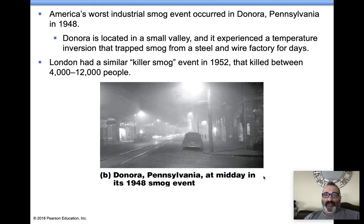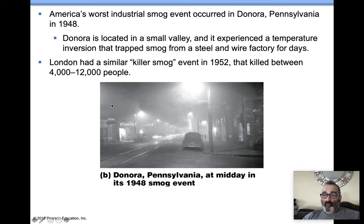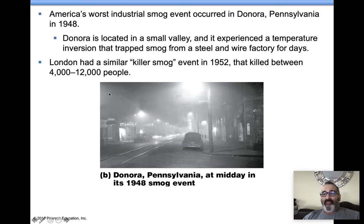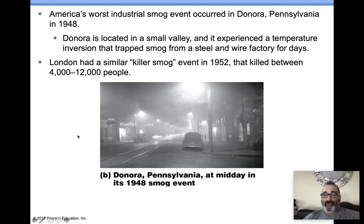What happened in 1948 in Donora, Pennsylvania? People died. It was a small valley and they had a thermal inversion — warm air went over cooler air, trapping pollutants at ground level. An inversion means a flip-flop: cold air above warm air, trapping pollutants below. It was midday and just dark. In London, a killer smog event happened in 1952. Thousands died. London's wet, damp, cooler conditions allowed inversions to trap industrial smog at ground level, making the air terrible to breathe.